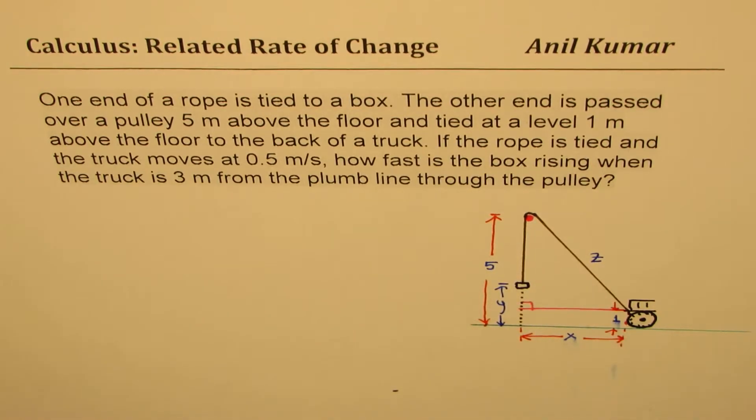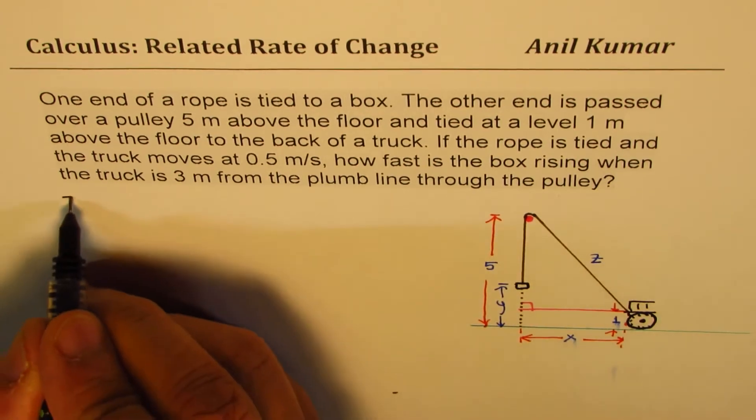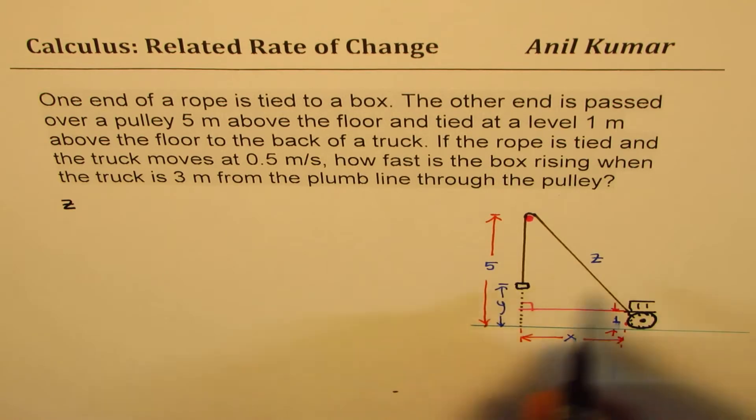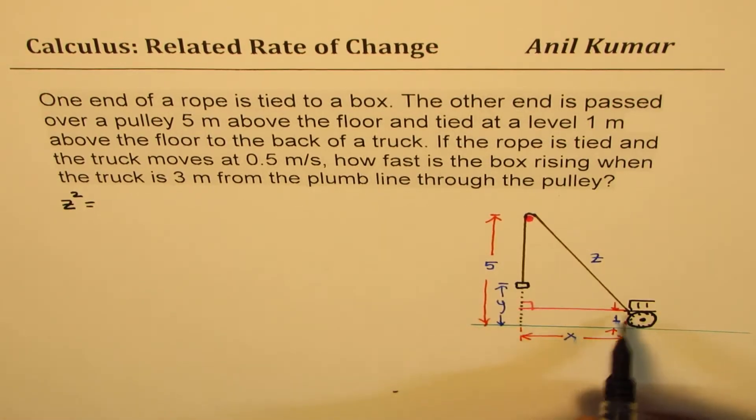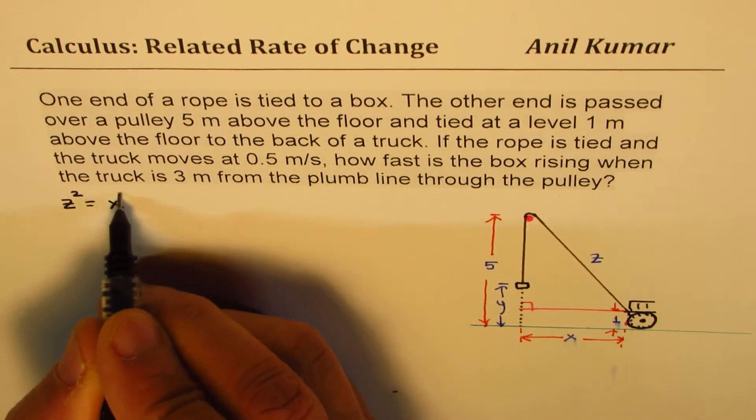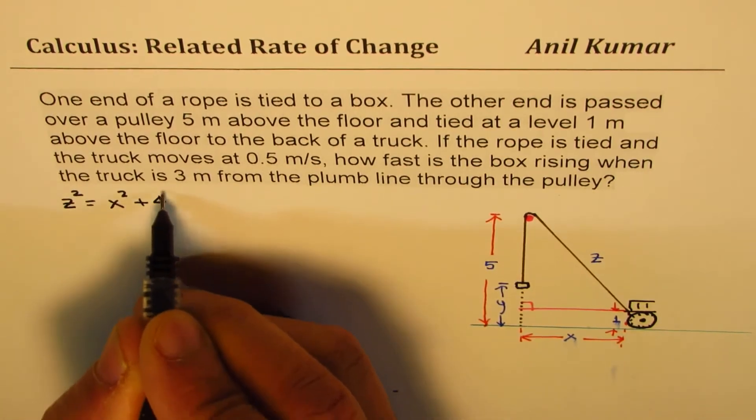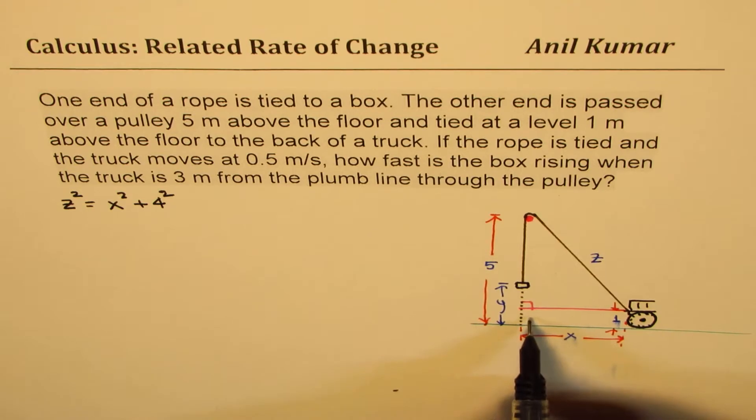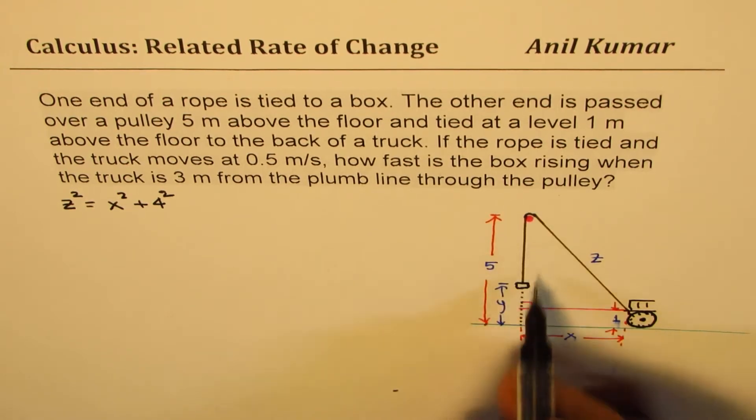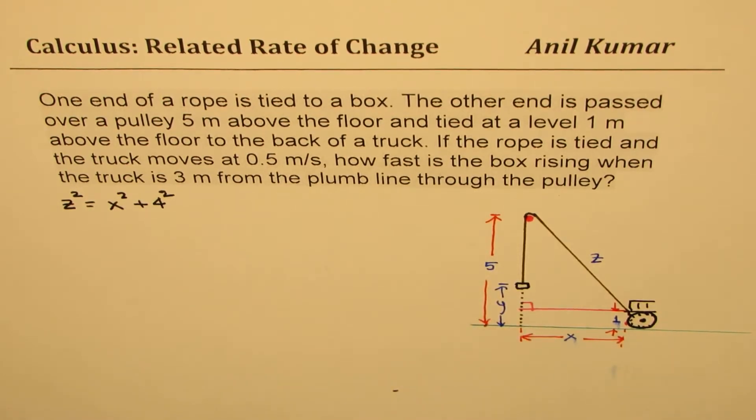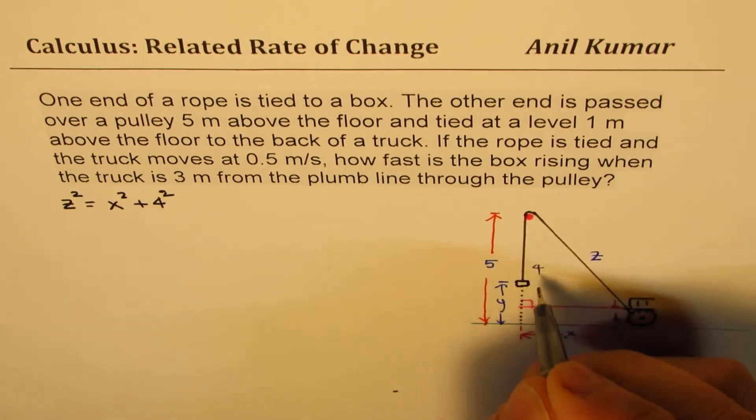If I look into the equation for hypotenuse, I could always write Z squared equals this distance X squared plus 4 squared. Since this is 5 and this is 1, this is 1, so the whole thing is 5 minus 4. So you can clearly see that this length is 4.